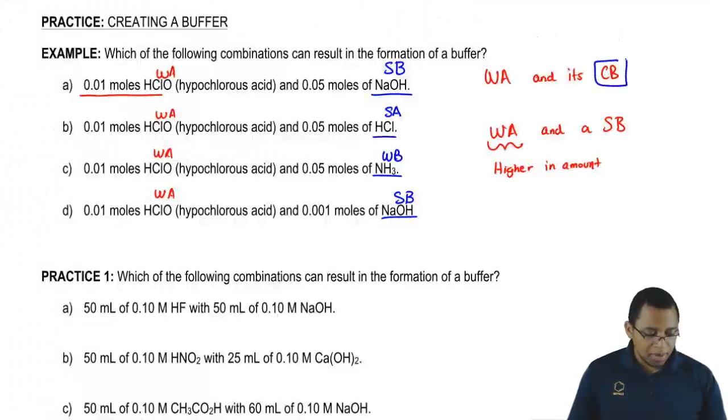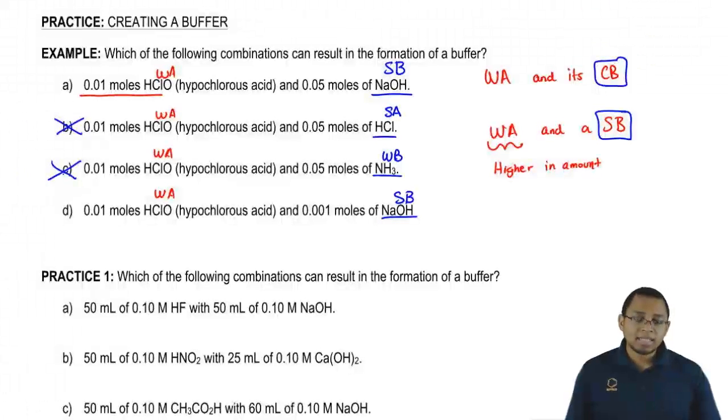We're looking for the weak acid to be paired up with the conjugate base or the strong base. So automatically, these two are out. Because we can't pair up a weak acid with a strong acid or a weak acid with a weak base. It has to be a conjugate base or a strong base.